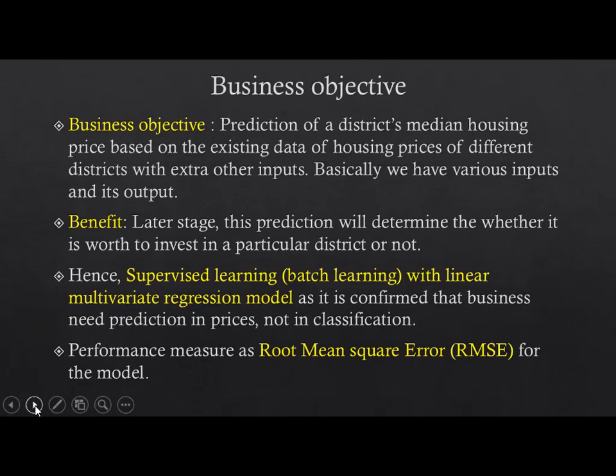By considering these two points, we frame our machine learning algorithm. We have this kind of inputs, so it is supervised learning and batch learning because we already have existing data. It is supervised learning because we have data with expected outputs — it's past data. It is a multivariate regression model because we have different kinds of inputs, not a single variable. As the business needs price prediction and not classification, prices are continuous float values, so we go with linear regression rather than classification.